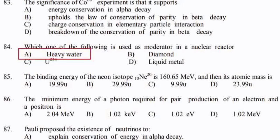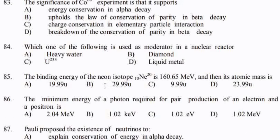The binding energy of the neon isotope is 160.65 MeV. Then the atomic mass of neon — option A: 19.99.